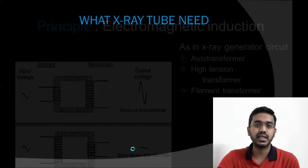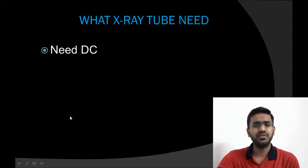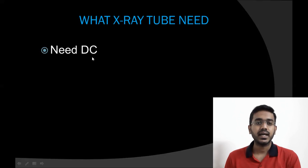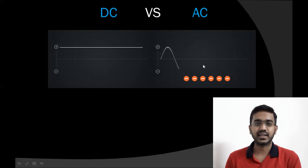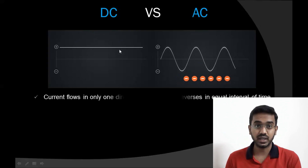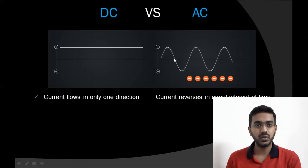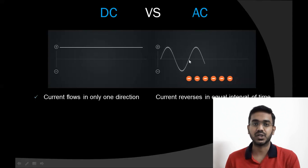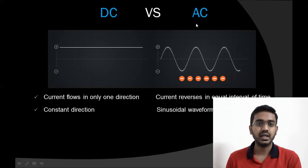Now let's see the other components in the circuit. The X-ray tube needs DC, that is direct current. In direct current, the current flows in only one direction. But in alternating current, the current reverses at equal intervals of time — it goes from 0 to positive, positive to 0, 0 to negative, and again to 0, and the cycle continues. The direction is constant for DC, while it is sinusoidal for AC.